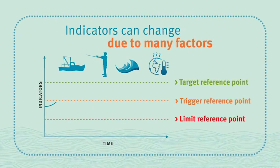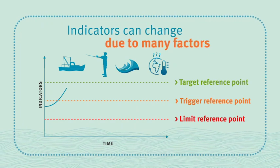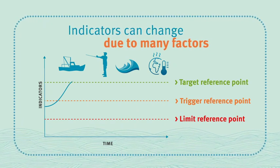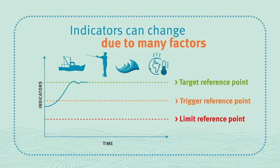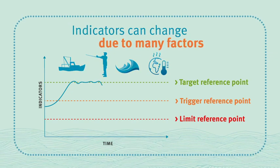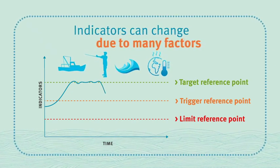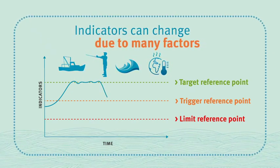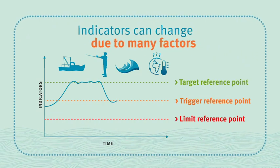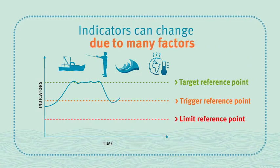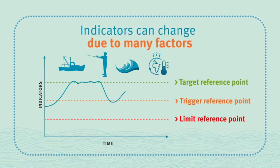Harvest strategies can improve stability of the fishery, with decision rules designed to keep harvest within sustainable target levels. Indicators such as biomass can be used to measure how fish stocks are coping with fishing and other pressures over time. Decision rules triggered at reference points aim to avoid further decline.